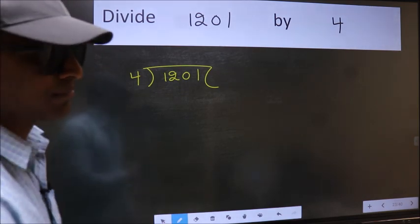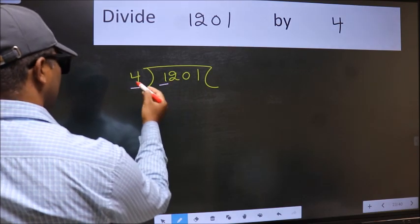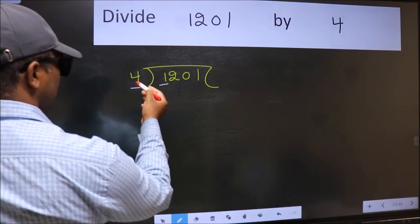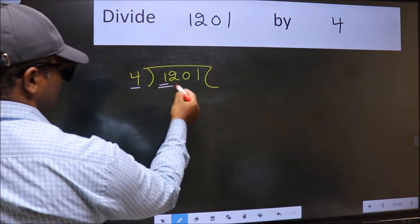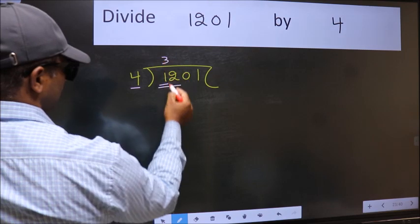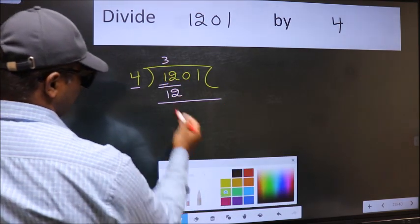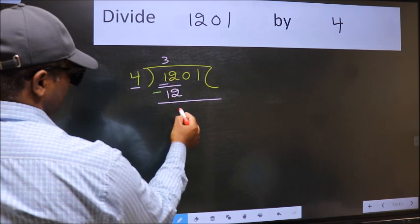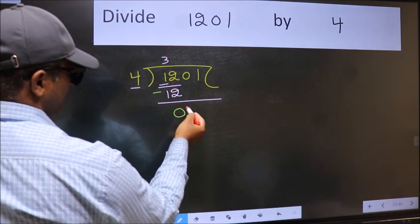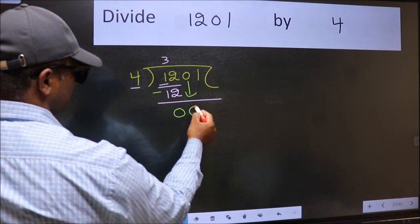Next. Here we have 1 and here 4. 1 is smaller than 4. So we should take two numbers, 12. When do we get 12 in 4 table? 4 times 3 is 12. Now we should subtract. 12 minus 12, 0. After this, bring down the beside number. So, 0 down.